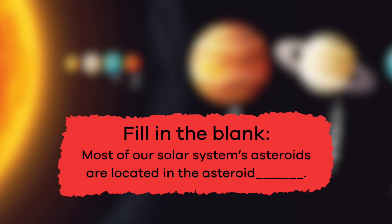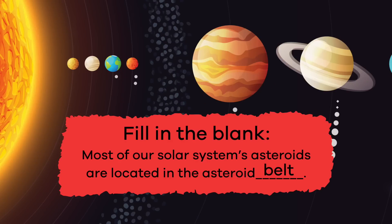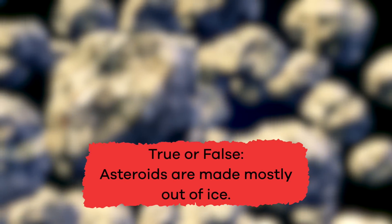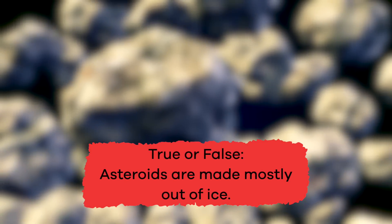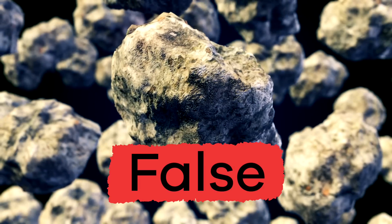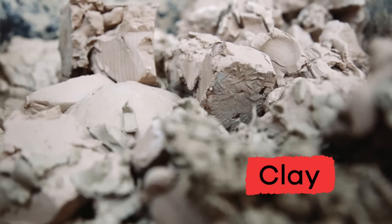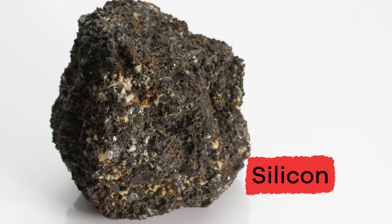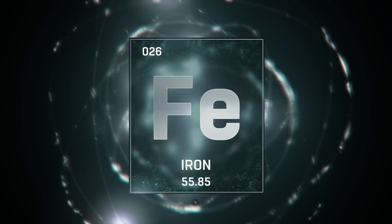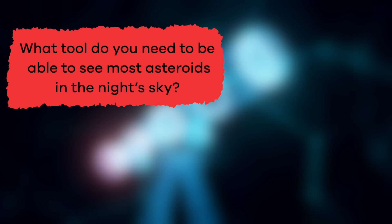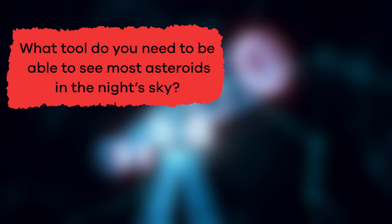Now that we've learned some cool asteroid facts, let's put our knowledge to the test. Fill in the blank: Most of our solar system's asteroids are located in the asteroid belt. Did you get that? Awesome! True or false? Asteroids are made mostly out of ice. False! Asteroids are made mostly of rock, but some can also include clay, oxygen, and silicon, or metals like nickel or iron. What tool do you need to be able to see most asteroids in the sky? A telescope!